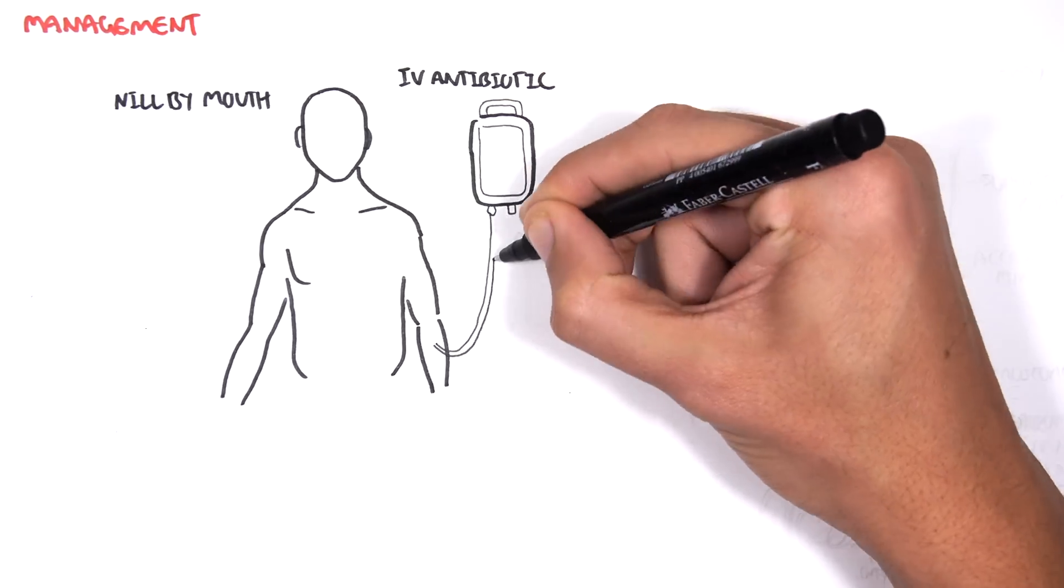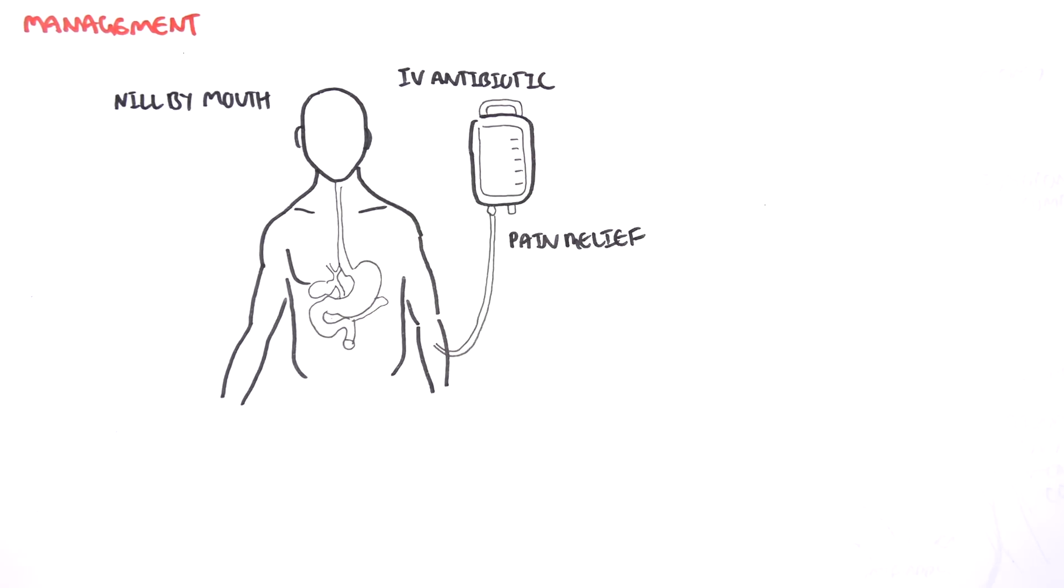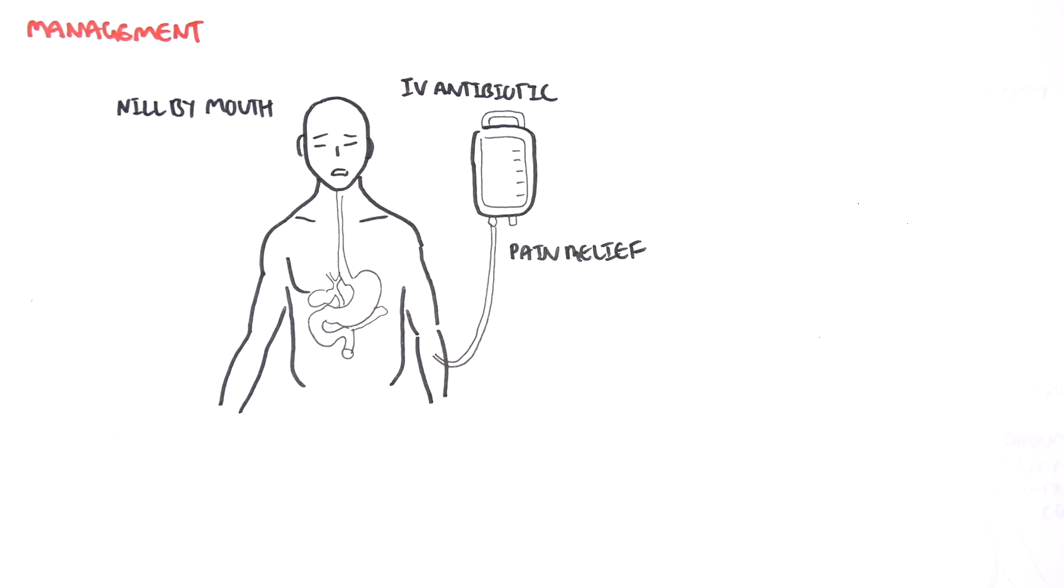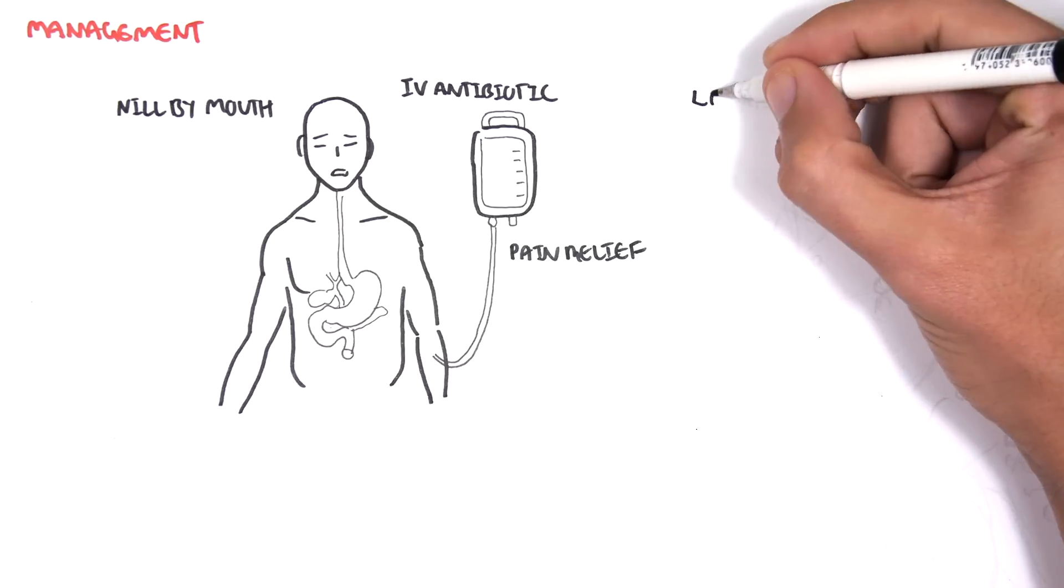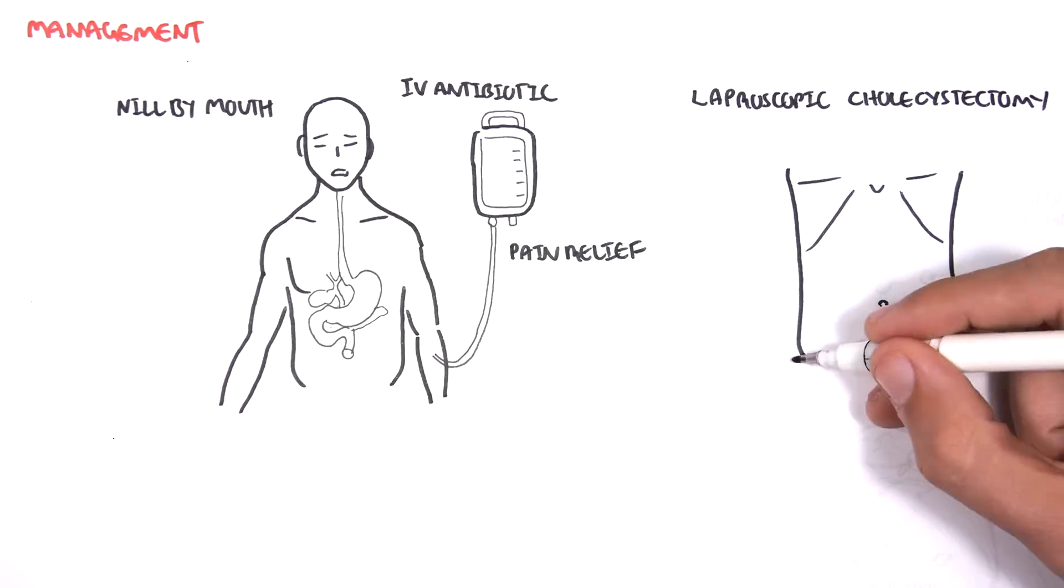The management of acute cholecystitis before surgery is nil by mouth, fluids and IV antibiotics, pain relief with analgesia. Surgery can be done laparoscopically or open. Laparoscopic cholecystectomy is done over open cholecystectomy.